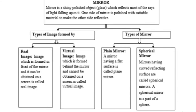Let us see the types of image formed by mirrors. An image is the appearance of the object as reflected by the mirror. Images are of two types: real image and virtual image. If the rays after reflection from a mirror actually meet at a point, then a real image is formed. But if the rays after reflection do not actually meet at a point but appear to meet when extended backward, then a virtual image is formed. A real image is formed in front of the mirror and can be obtained on a screen, whereas a virtual image is formed behind the mirror and cannot be obtained on a screen.